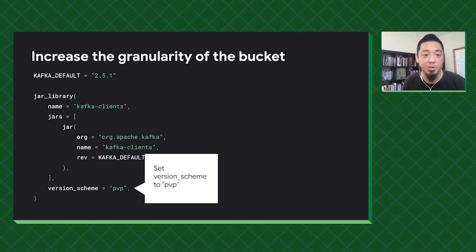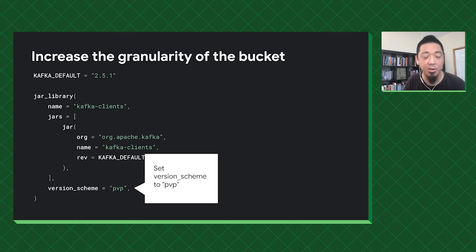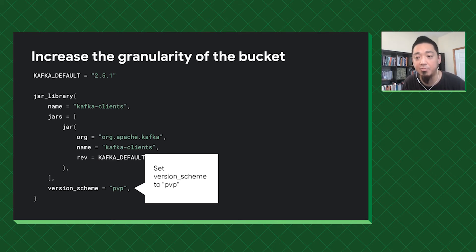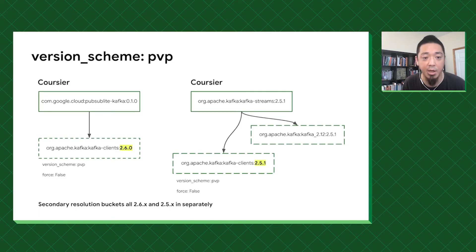If you've used Kafka before, especially Kafka Streams, you might not want these evictions to happen. If we consider Kafka 2.4, 2.5, and 2.6 to be different libraries we want to track, we could increase the granularity of the bucket by setting it to PVP. PVP is a term used by Coursier as well as SBT to mean that the first two segments of the version — like 2.1 — form the major version. This comes from Haskell's Package Versioning Policy. By setting it to PVP, we can increase the granularity so that Kafka 2.6 and 2.5 are tracked separately.